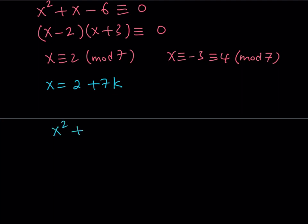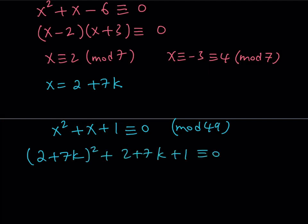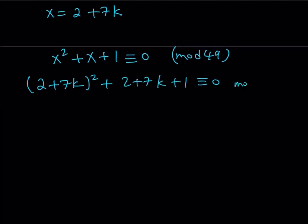So that was x² + x + 1 ≡ 0 (mod 49). Let's go ahead and substitute. So if you substitute 2 + 7k here and here, you're going to be getting another congruence. Let's go ahead and solve it. This one is going to be more fun to solve because we do have some 7s in it, which is going to be kind of nicer.